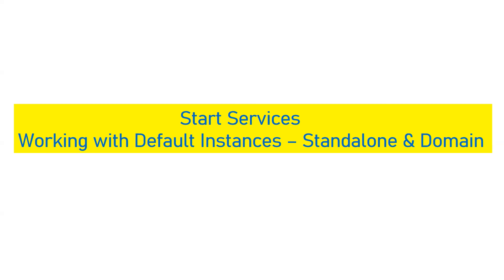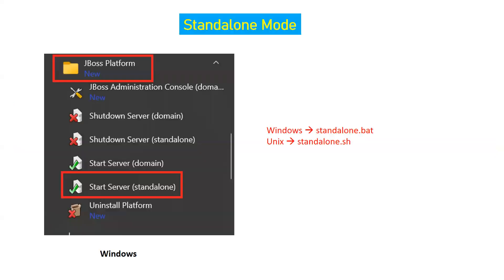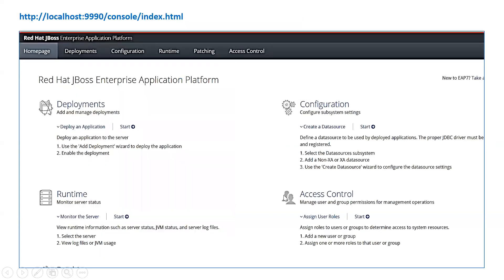When starting in standalone mode on Windows, you can use the startup menu shortcut — a JBoss platform folder with shortcuts named 'Start Server Standalone' and 'Start Server Domain'. Alternatively, use the standalone.bat script on Windows or standalone.sh on Unix to start your instance. Then access the management console using the host IP and management port 9990, followed by '/console'.